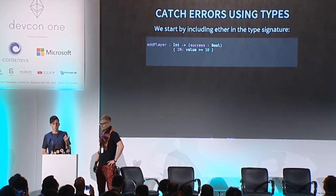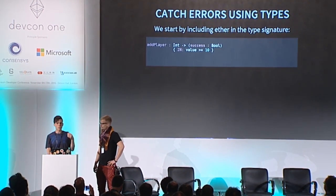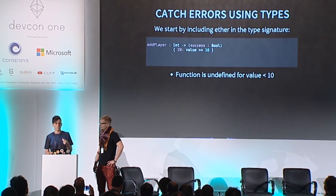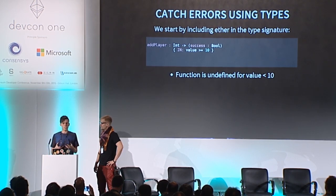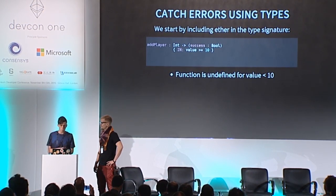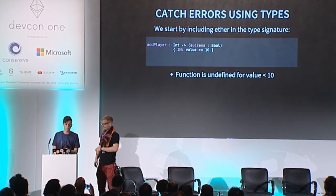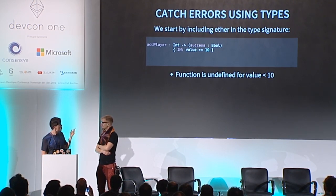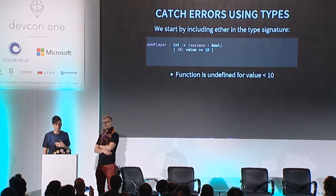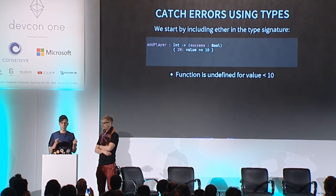If we want to encode ether flow in the type system, we can start by including the transaction value in the type signature like this. As you can see, we have also put a precondition on the value saying that this function requires at least 10 ether to be executed — otherwise the transaction is considered invalid and all ether is automatically returned to the sender. This is neat, but it doesn't fully solve our problem. However, we actually already know the function's result and the transaction value, which is enough information to specify how the function should handle ether in all execution paths.